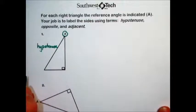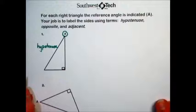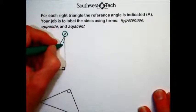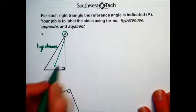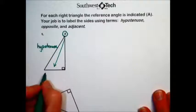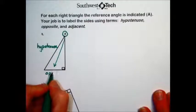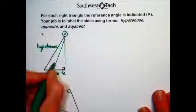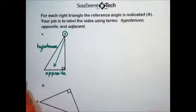Next, we're going to locate and label the opposite side. It's located directly opposite of the reference angle. So this leg that's making up the right angle is called the opposite because it is opposite from the given acute reference angle.